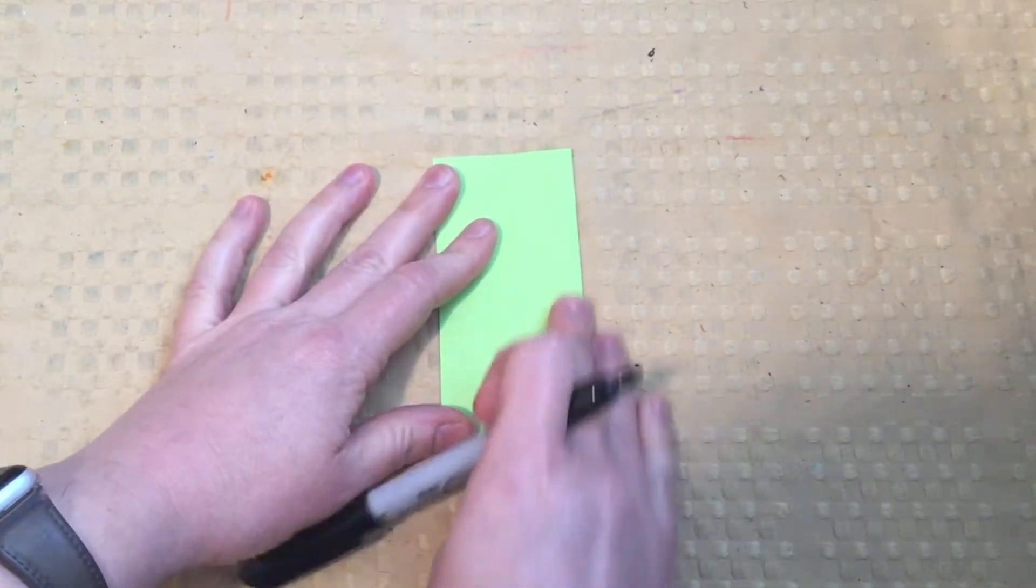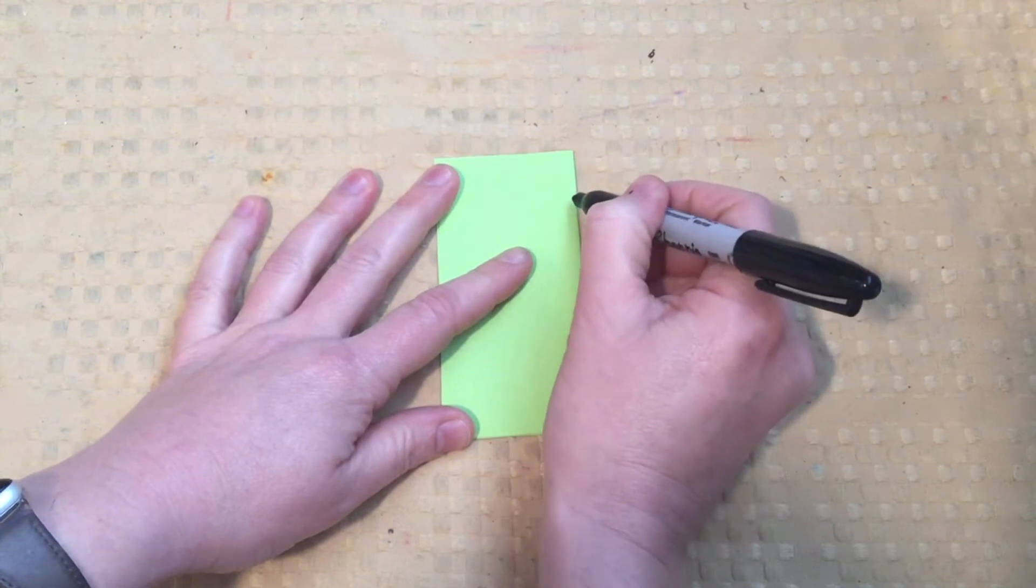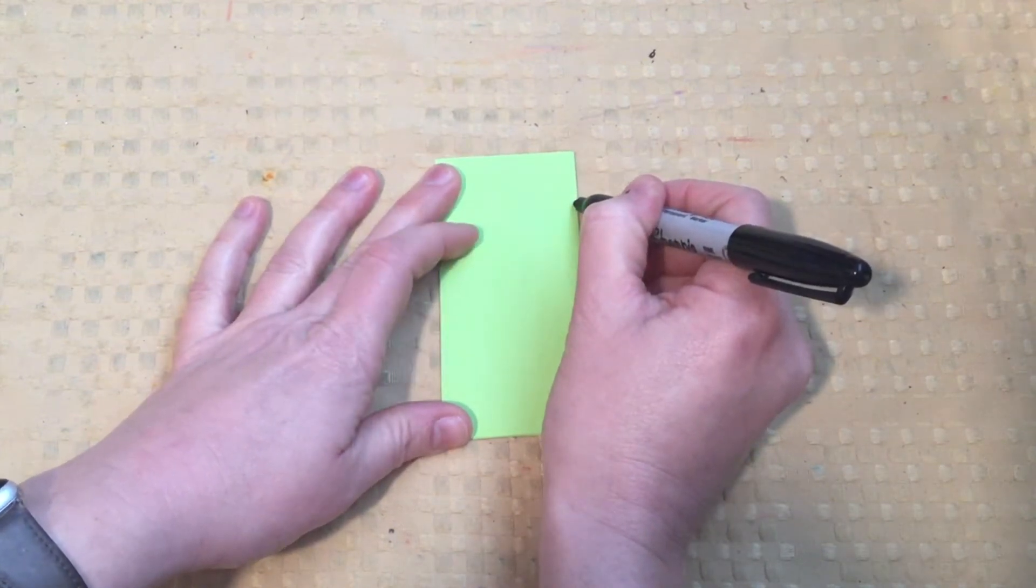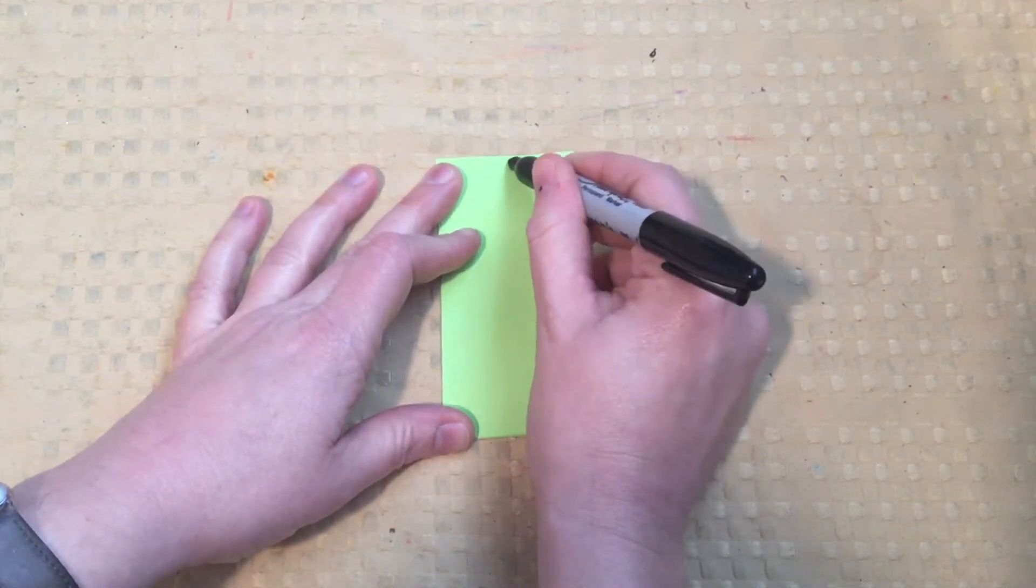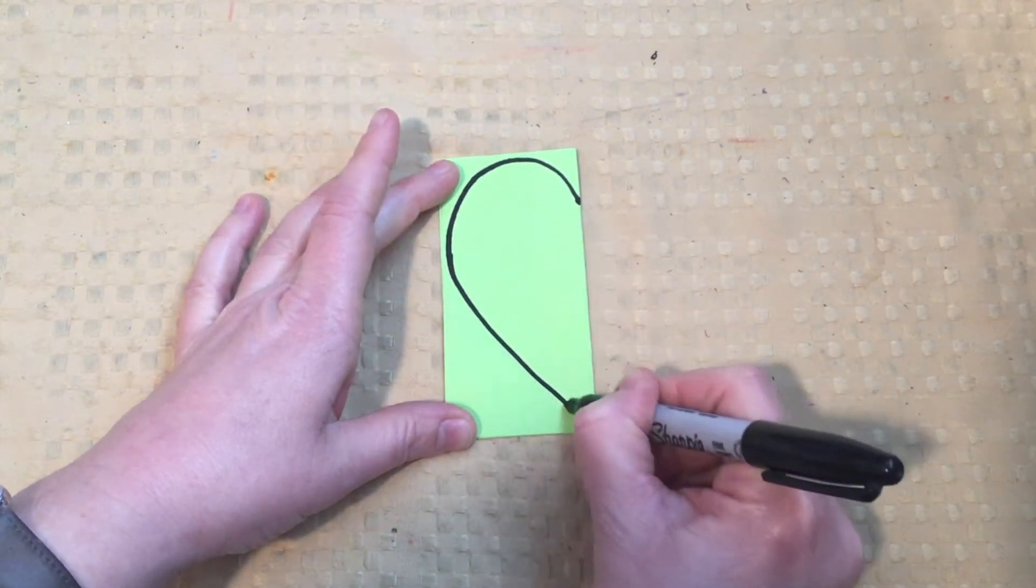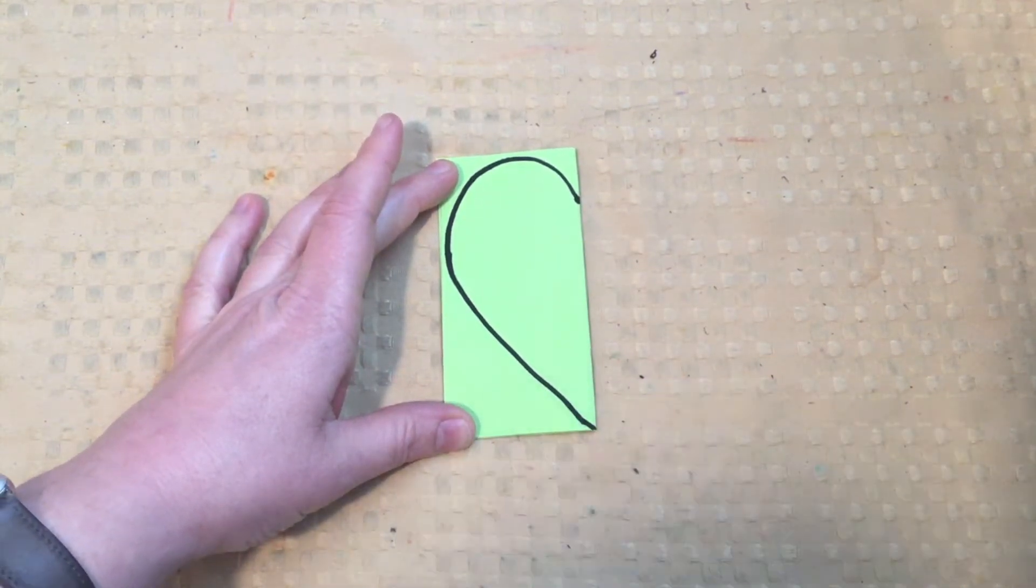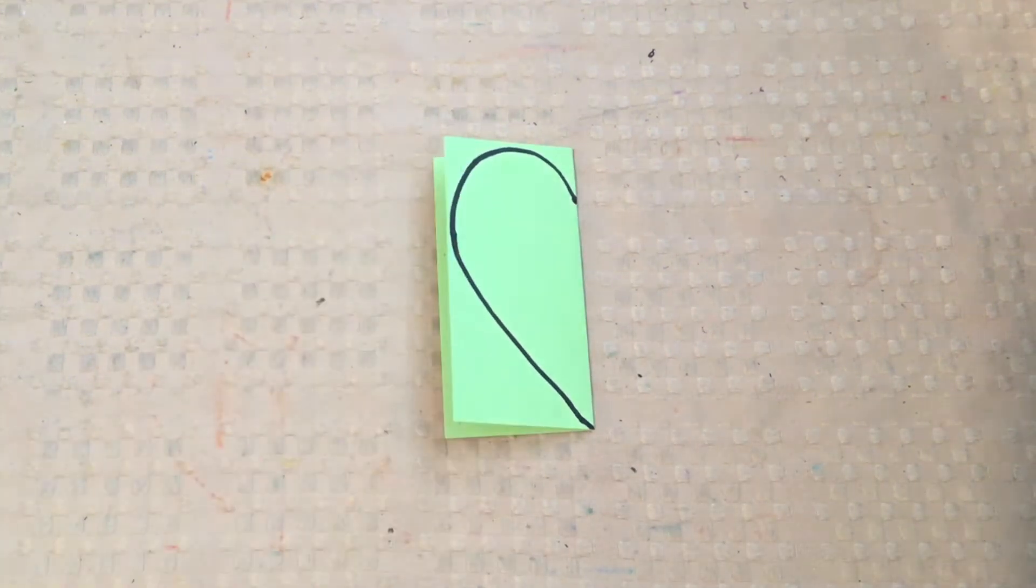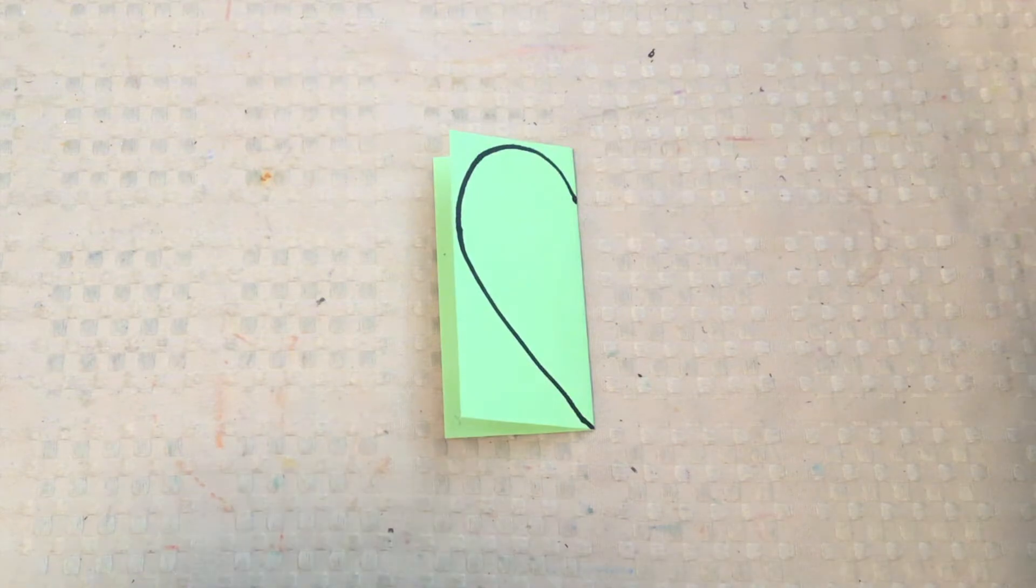I'm going to draw on the folded side. I'm going to start a little ways down. I'm going to make my half a heart shape. So it's almost like a candy cane. I curve up to the top, curve down to the side, and straight line to the corner. Some people also say it looks like a teardrop or an ear, whatever you think it looks like. We're going to draw that half of a heart.